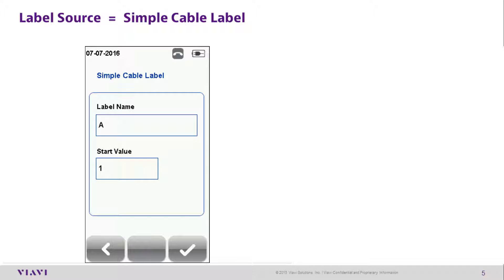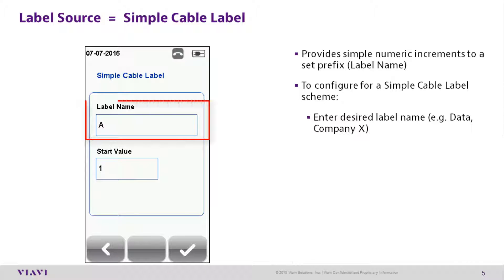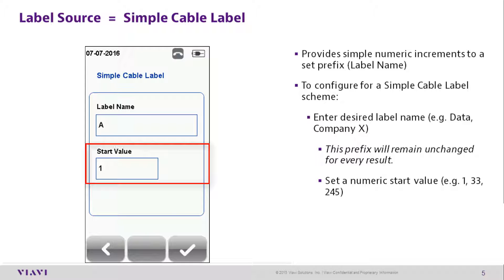Simple Cable Label provides a simple numeric increment with a set prefix such as Alpha or Bravo. To configure a simple cable label scheme, enter the desired label name. This prefix will remain unchanged for every result. Set a numeric start value — this value will increase by 1 after each test saved.